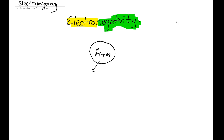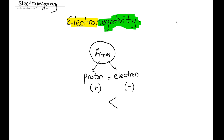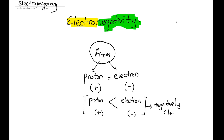We know that an atom has protons and neutrons. Protons are positively charged and electrons are negatively charged. An atom is neutral, so it always has to have an equal number of protons and electrons. So if you have more electrons than protons, you have too many electrons to cancel the charge, leaving a leftover negative charge — now you are an ion.